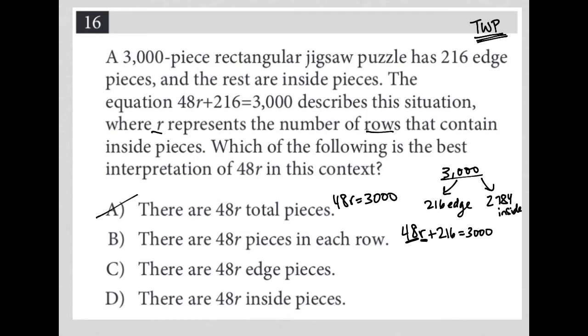Choice B, there are 48R pieces in each row. I don't think that's it either because if R represents the number of rows, R could be 5. So if you're 5 rows down, that's how many total pieces you'd have is 48 times 5. So it's not how many pieces there are in each row. It's the number of pieces that there are in total for however many rows you're focusing on. So I don't like B.